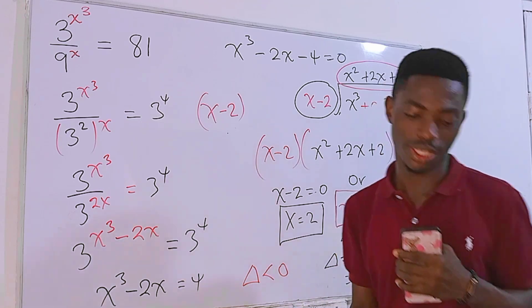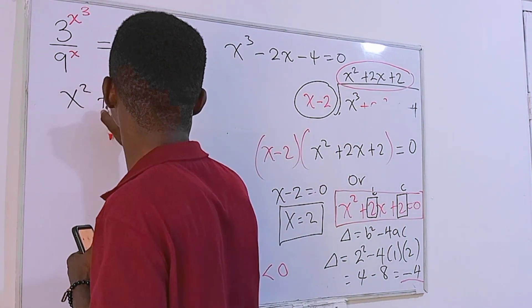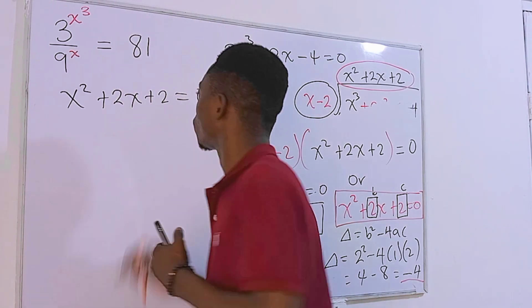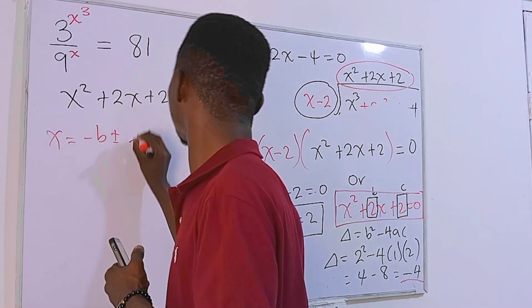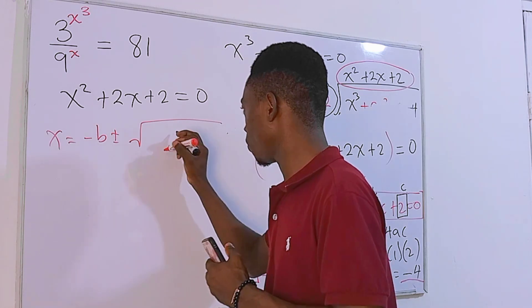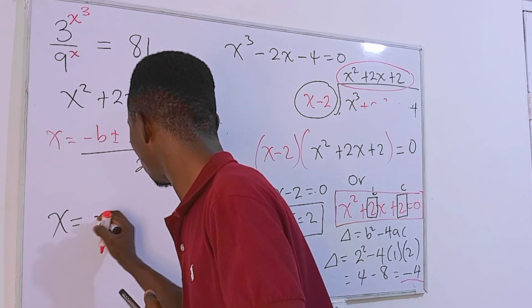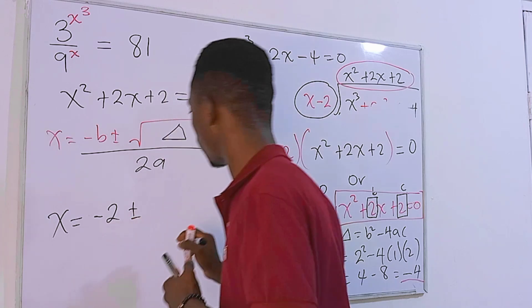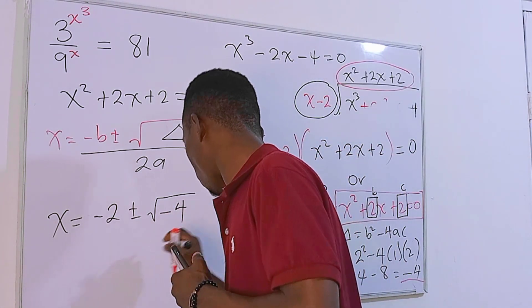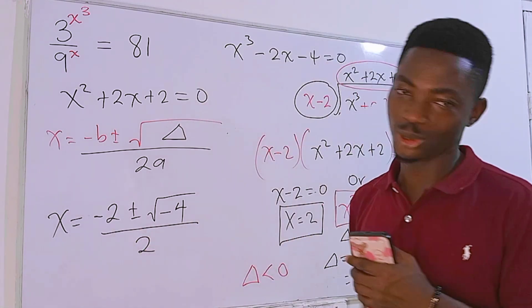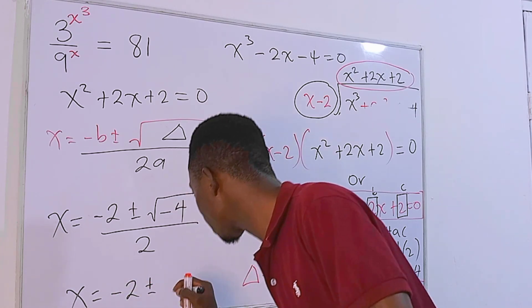Our focus now shifts to complex solutions. The quadratic equation is x squared plus 2x plus 2 equals zero. Using the quadratic formula: x equals negative b plus or minus the square root of (b squared minus 4ac) all divided by 2a. That gives x equals negative 2 plus or minus the square root of negative 4, divided by 2.